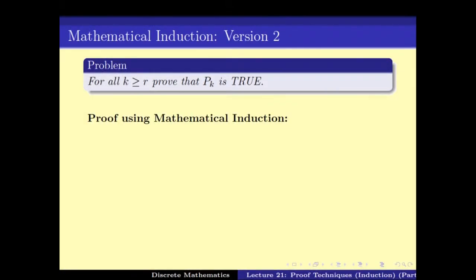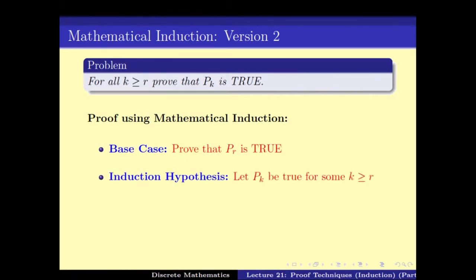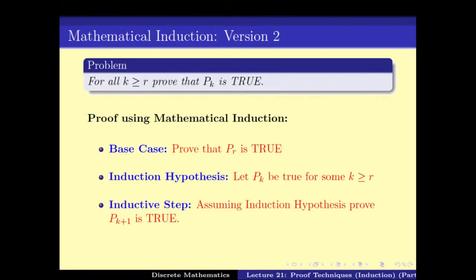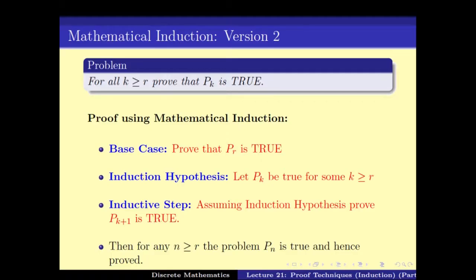The induction hypothesis says that Pk is true for some K ≥ 1, and the inductive step says that assuming the induction hypothesis is true, Pk+1 is true. Version 2 basically says that we can change the base case to some other number R, and that would imply that for all K ≥ R, Pk is true. For proving K ≥ R Pk is true, we start with the base case PR and the rest remains the same.